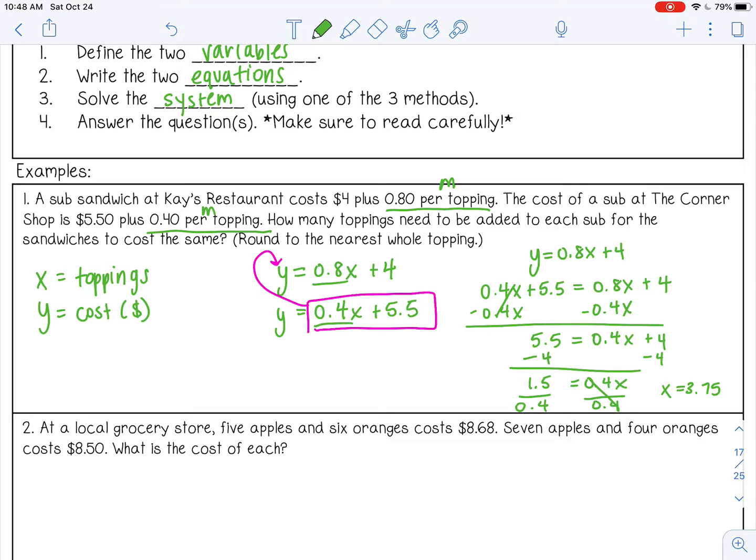All right, so we can substitute that back in. 3.75 into, I'm just going to use the first equation. I'm going to use my calculator for this because I have all those decimals. Let's see, 0.8 times 3.75 plus 4 is 7.